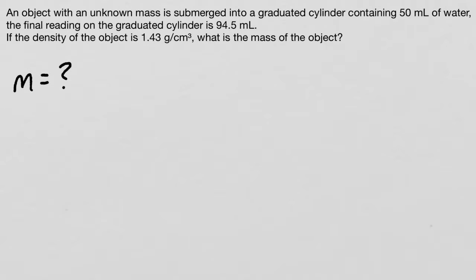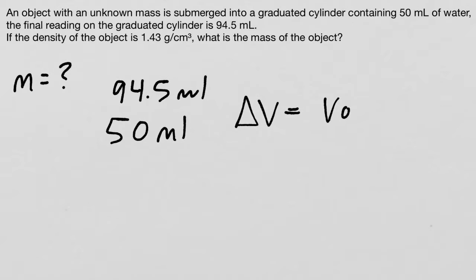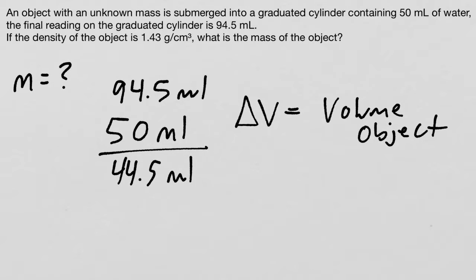If we can figure out what the volume of the object is, we can use the density to convert between that volume and the object's mass. The graduated cylinder initially contained 50 milliliters of water, and once we entered this object, the graduated cylinder now read 94.5 milliliters. Remember volume by displacement - this difference in volume is going to be equal to the volume of the submerged object. That means 44.5 milliliters is the volume.